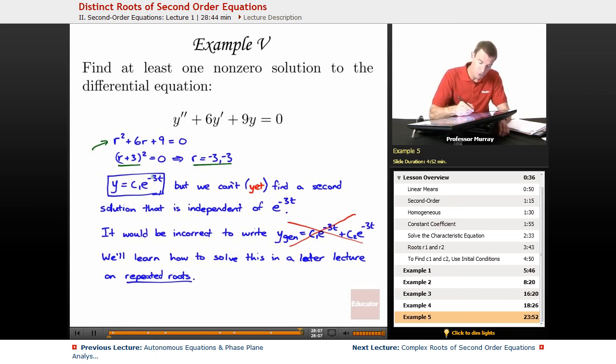So we were able to form one solution, c1e to the negative 3t, but we can't find a second independent solution, so we can't tack on a c2e to the negative 3t because that would just be a copy of the first solution. So, in order to find a second solution, we're going to have to come back and study this in more detail on our later lecture on repeated roots.